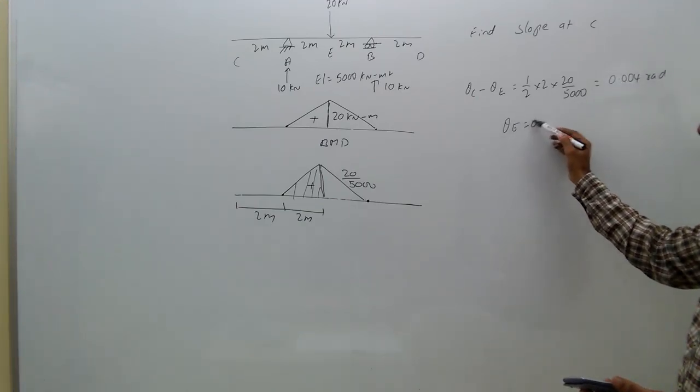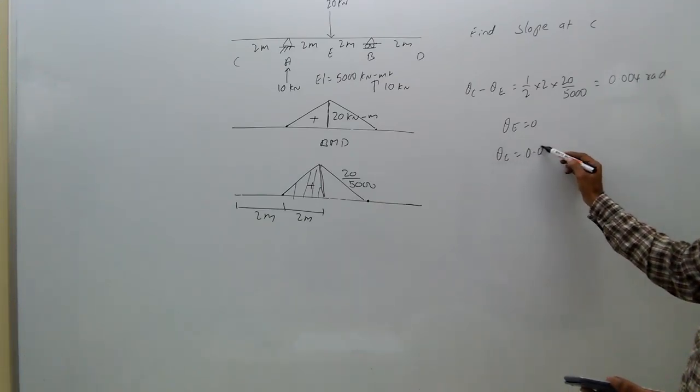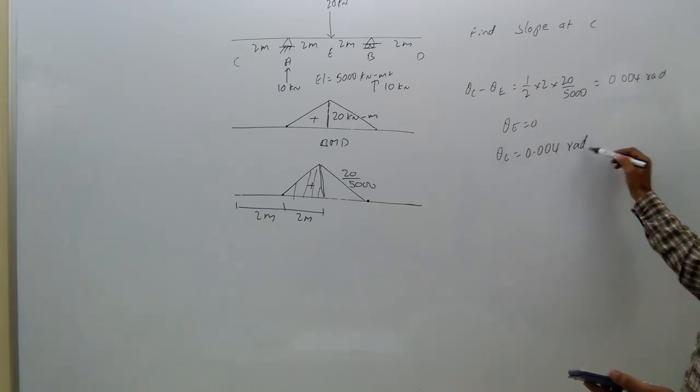We know theta e equal to 0, therefore theta c equal to 0.004 radians.